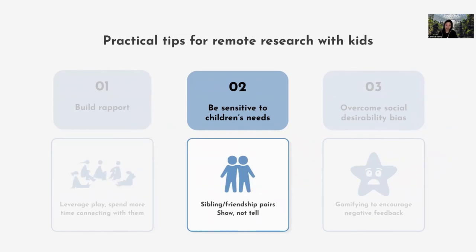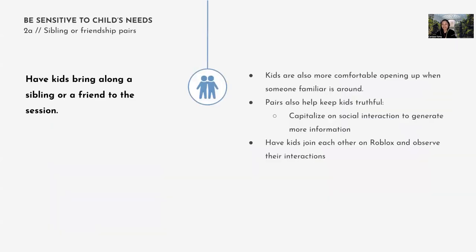The second tip is being sensitive to children's needs. One approach is having sibling or friendship pairs for your research sessions. Kids are more comfortable opening up when somebody familiar is around — in a remote session it can feel intimidating having a random adult stranger asking questions, but if you let them bring a friend or sibling it feels more informal and comfortable. Having pairs also helps keep kids truthful because they call each other out if someone is lying. You can also use the social interaction between kids to generate more information and glean more insight.